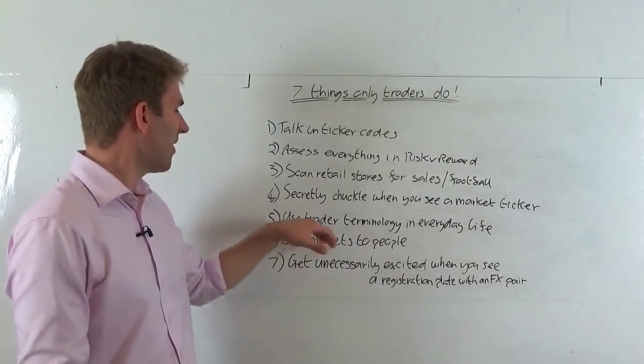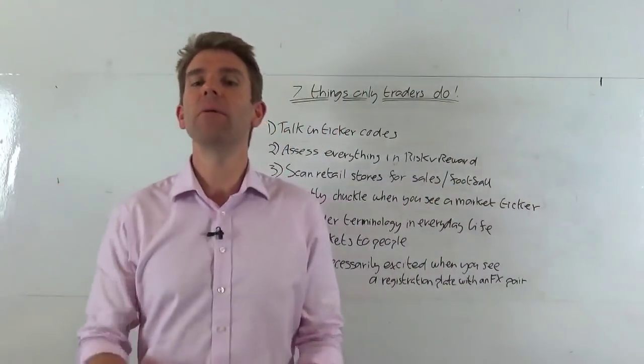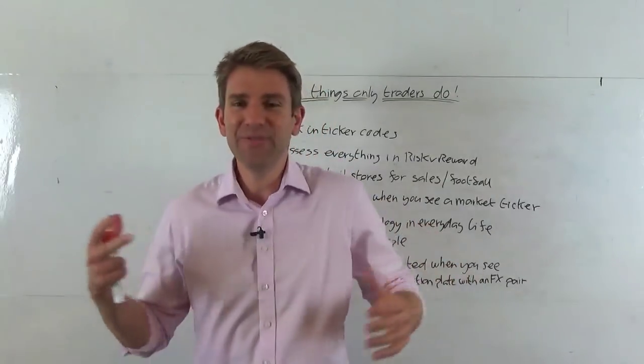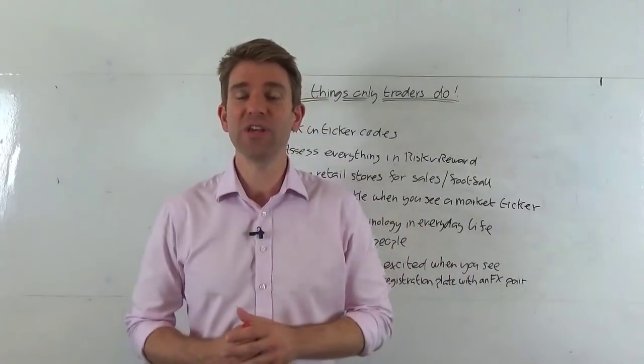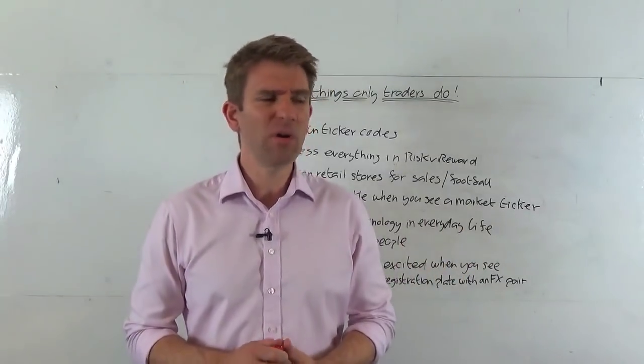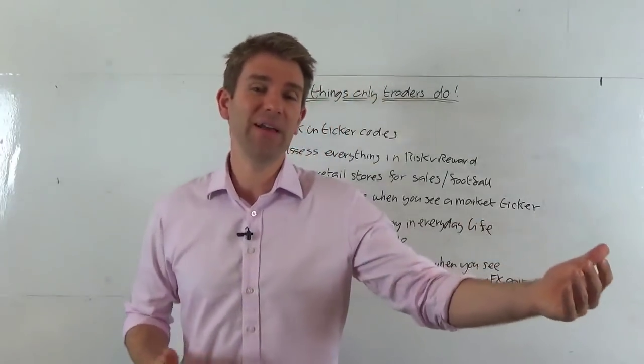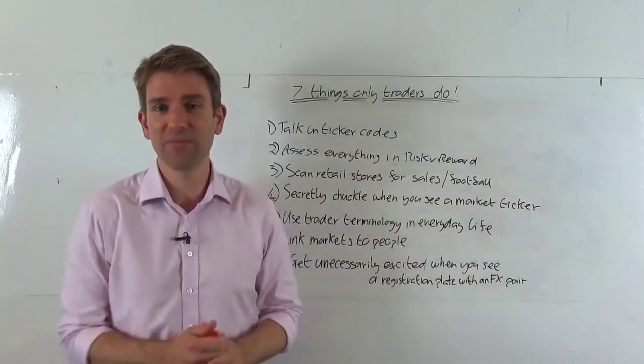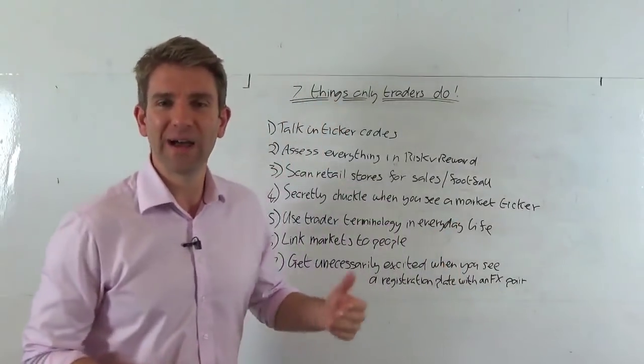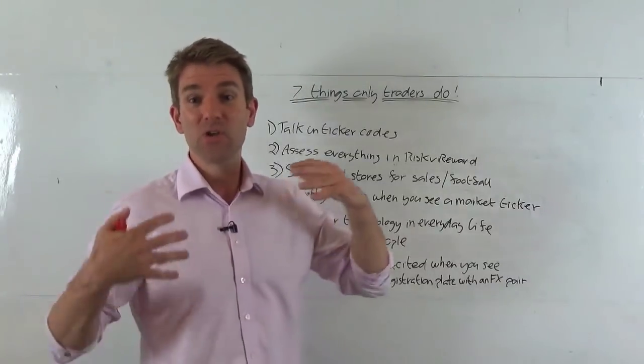Number five, using trader terminology in everyday life. So you're like, I'll go long on that. Yeah, I'm going short. Oh that's a dead cat bounce. You're kind of just using your terminology for trading, like yeah I'll hit the bid on that one, or you know I'll lift the offer. And you're just talking as you're doing normally, but you're talking about buying strawberries in a supermarket or something. You're saying, you know what, I don't think I'm gonna go long on that. And I think it's a good pair trade, you know.